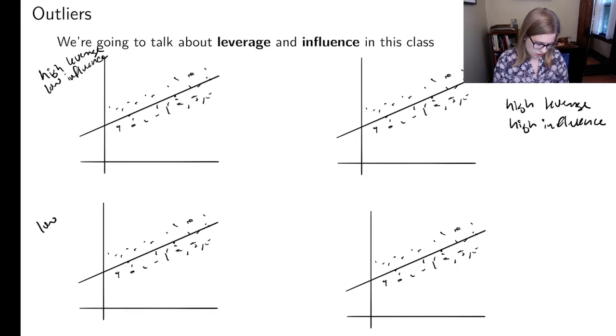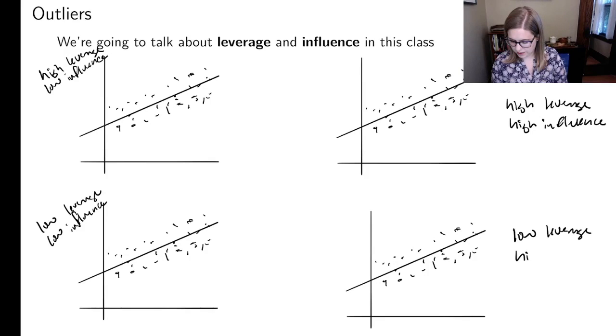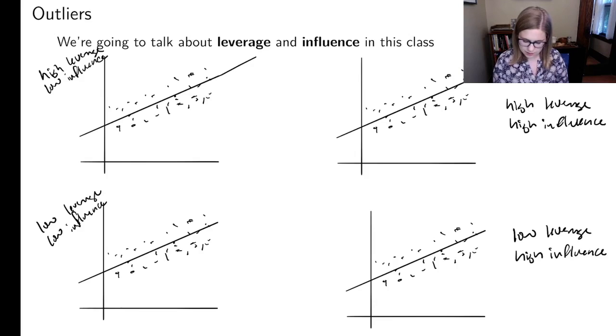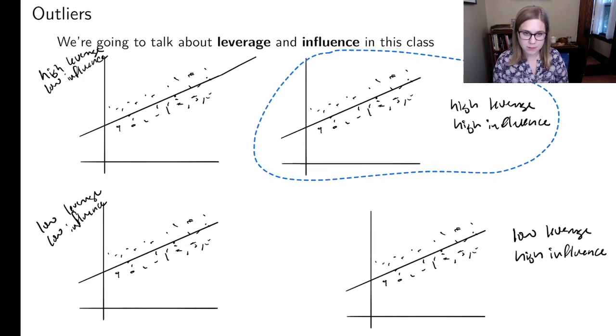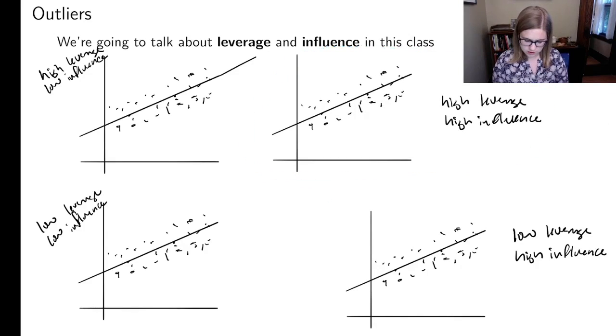Then over here, we've got low leverage, low influence. And finally, we've got low leverage, but high influence. For each of them, I'm going to call out a specific point that has that quality. So for leverage, I want to extend my regression line a little bit. And I'm going to move over this one because I think it's being blocked by my video.